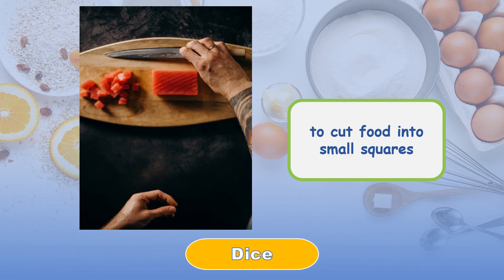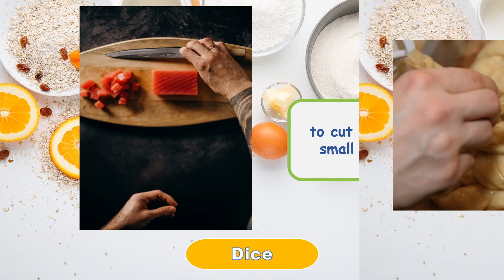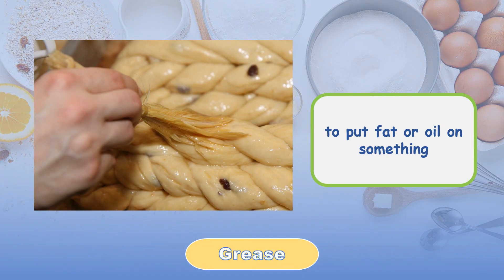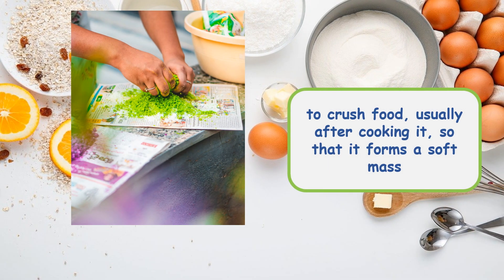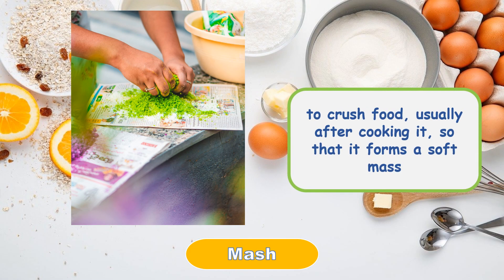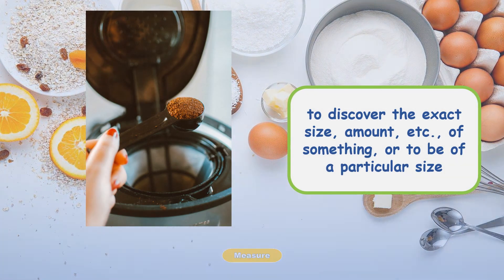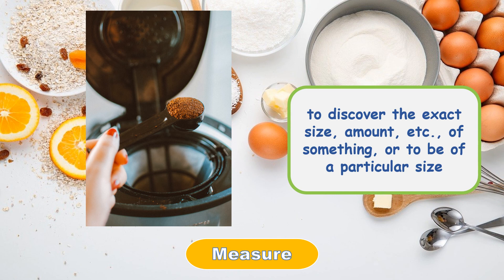Dice: to cut food into small squares. Grease: to put fat or oil on something. Mash: to crush food, usually after cooking it with heat, so that it forms a soft mass. Measure: to discover the exact size, amount, etc. of something, or to be of a particular size.